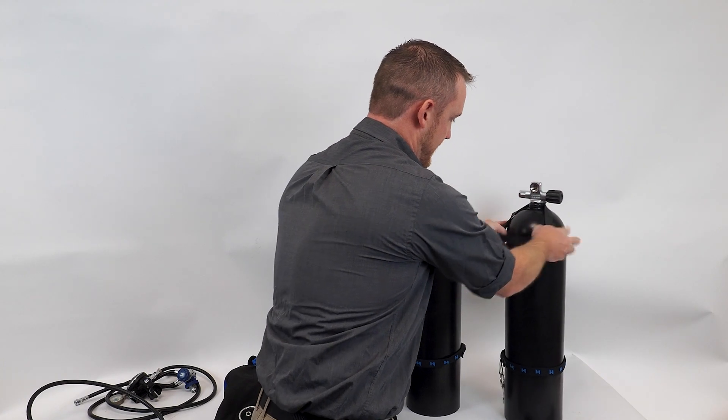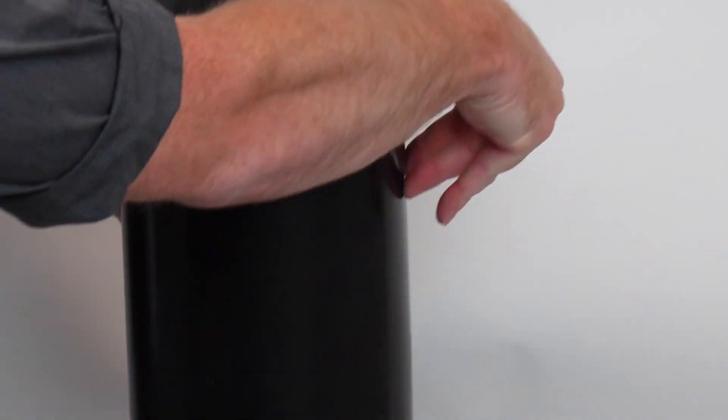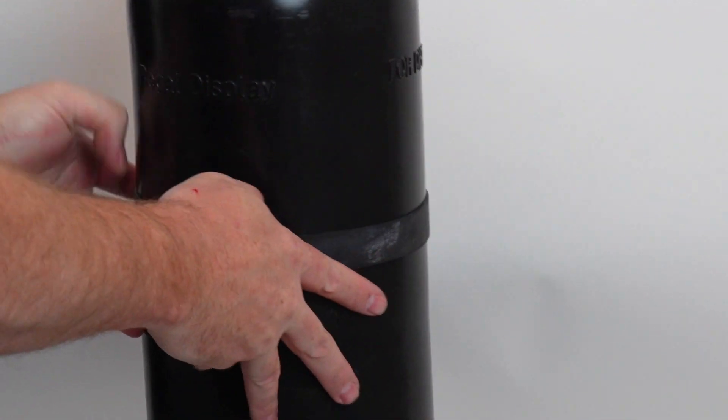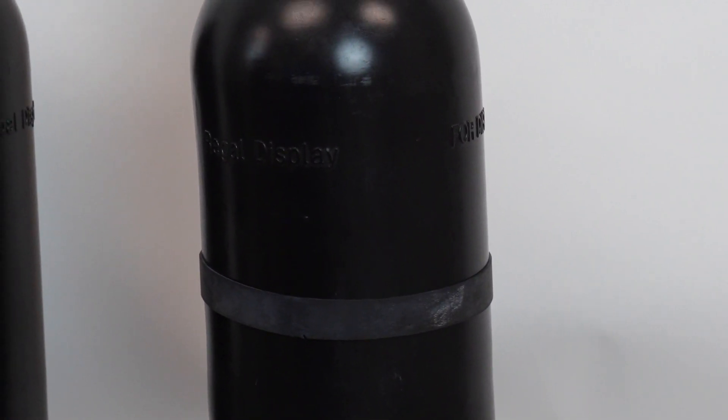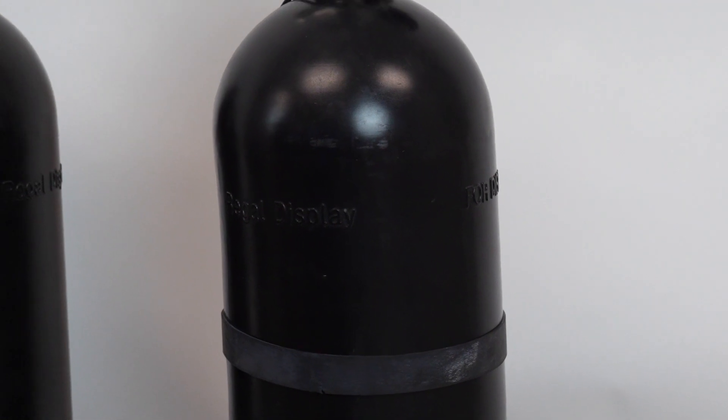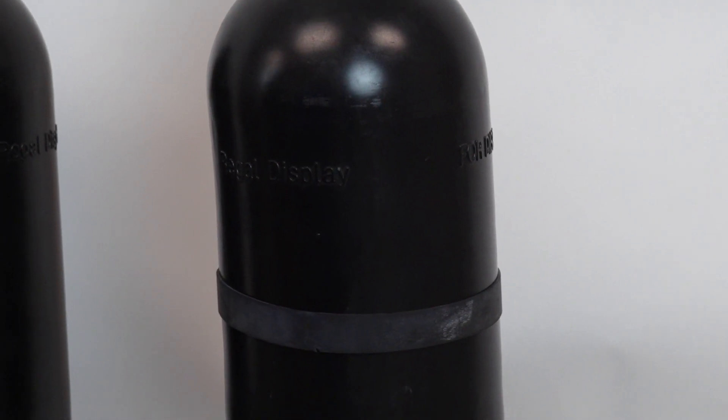Those bands can get positioned and adjusted over the cylinders wherever you need them. Generally, we do a top band and then we also do a bottom rubber band. That way, if we're pulling on the hose, it's not rolling up the band on us and it catches towards the bottom of that clamp.